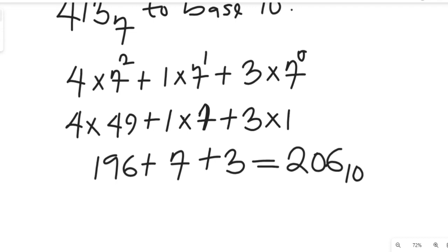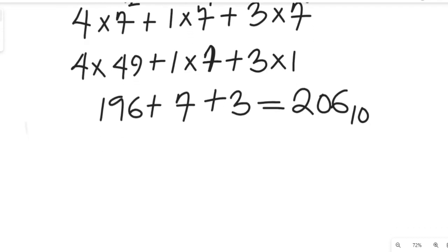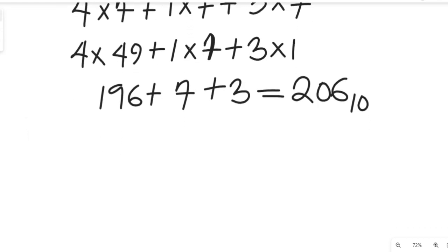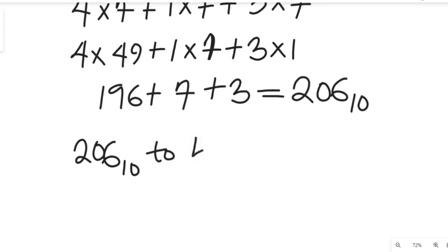The next step is to convert 206, which is in base 10, to base 5. To convert this to base 5, we are going to use the successive division method.